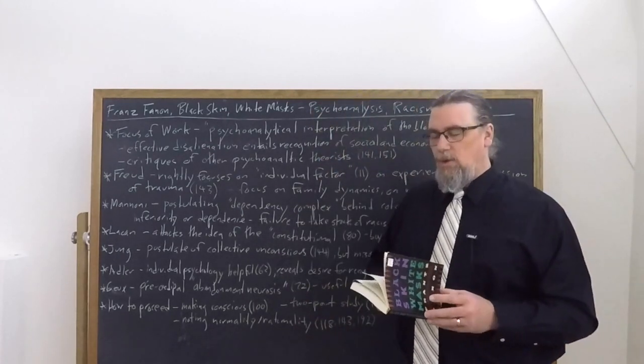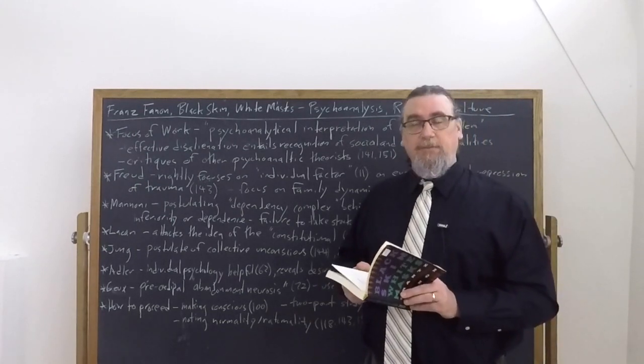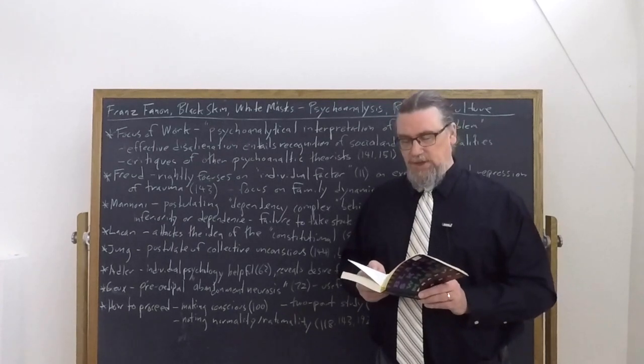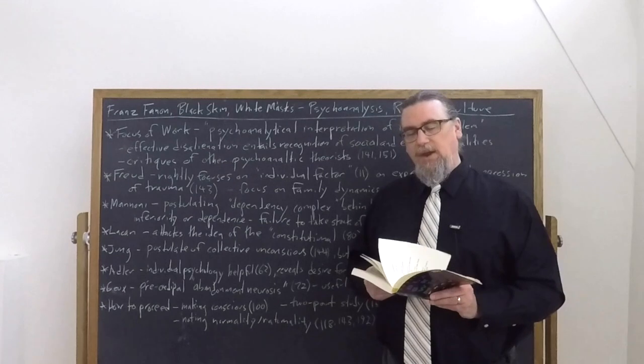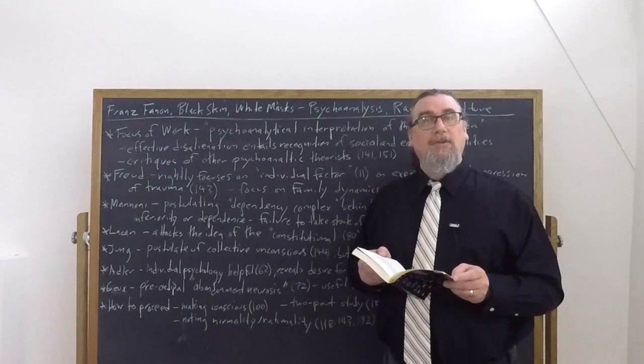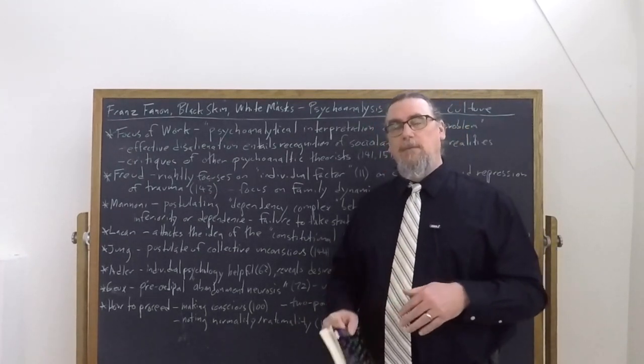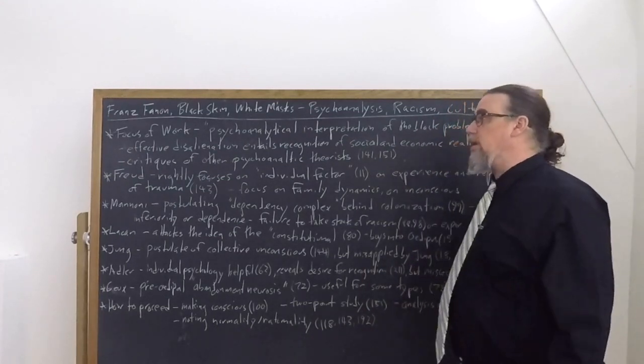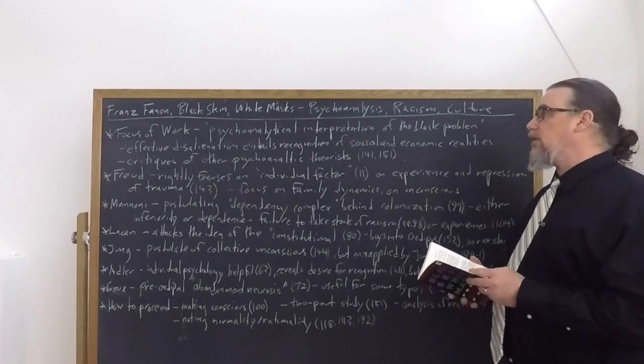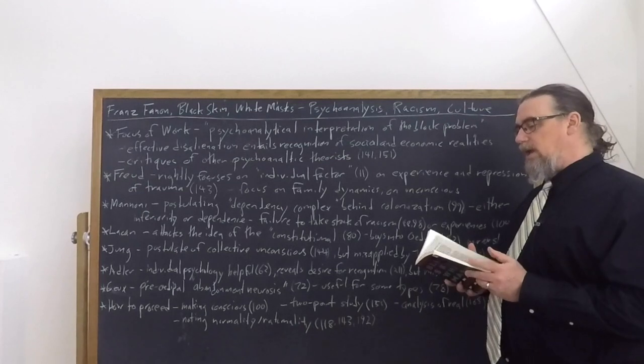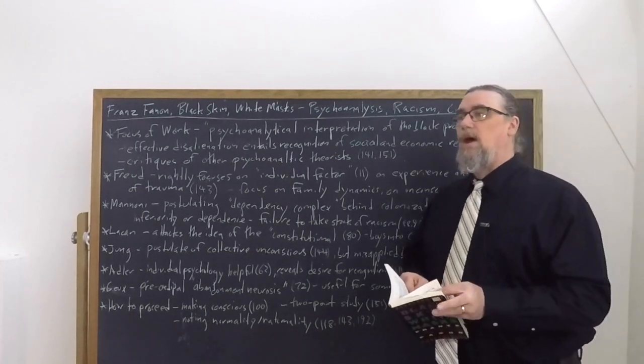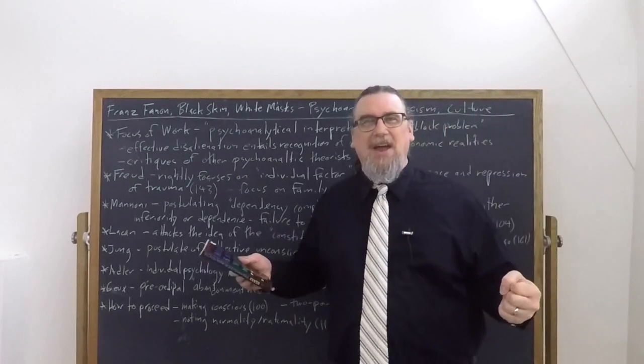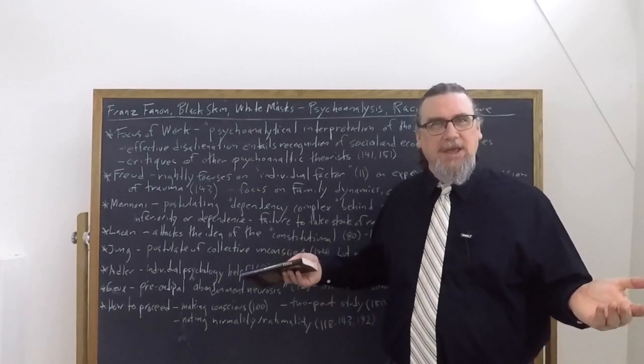If you look at the work as a whole, there are actually two chapters that are devoted specifically to examining psychoanalytic interpretations. Chapter four, so-called dependency complex of colonized people, and chapter six, the Negro and psychopathology. Also in chapter seven, about half of the chapters devoted to considering Adler's ego psychology. It's really quite important here. He is engaging in critiques of other psychoanalytic theorists.